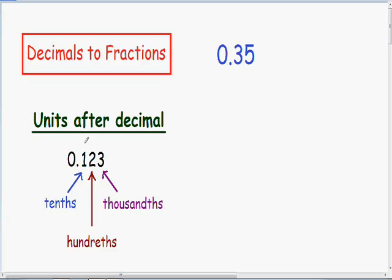Here we have 0.123. Let's take a look at our units. Notice the first unit to the right of the decimal is our tenths unit. The second unit to the right of the decimal is our hundredths unit, and the third unit to the right of the decimal is our thousandths unit.